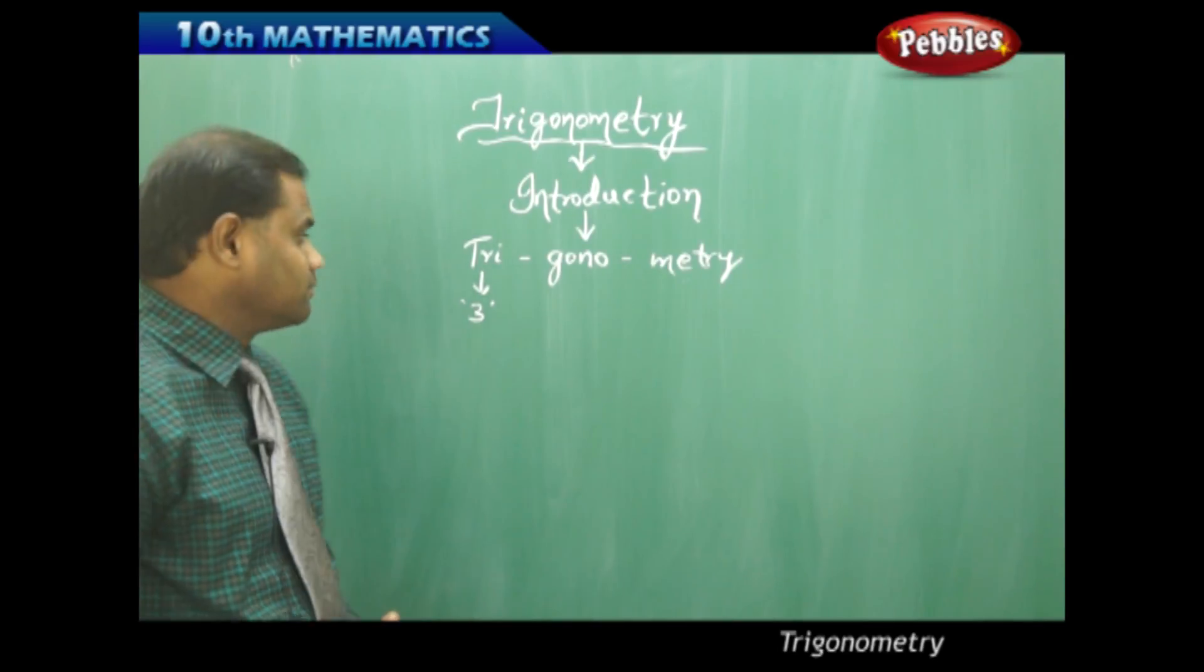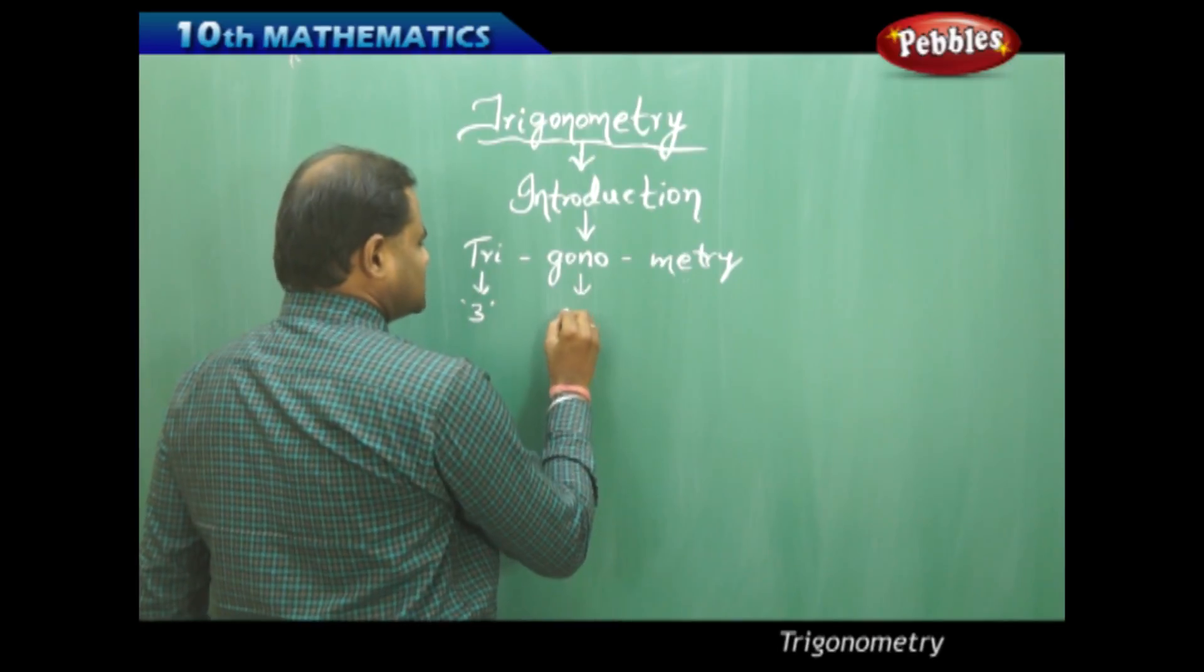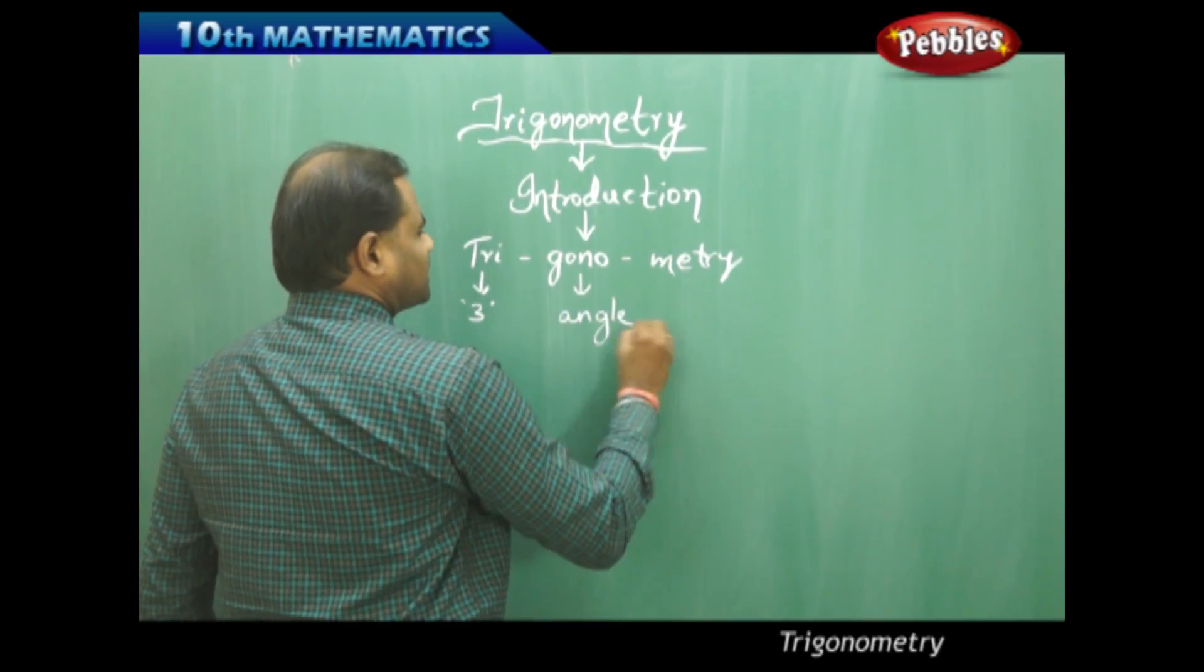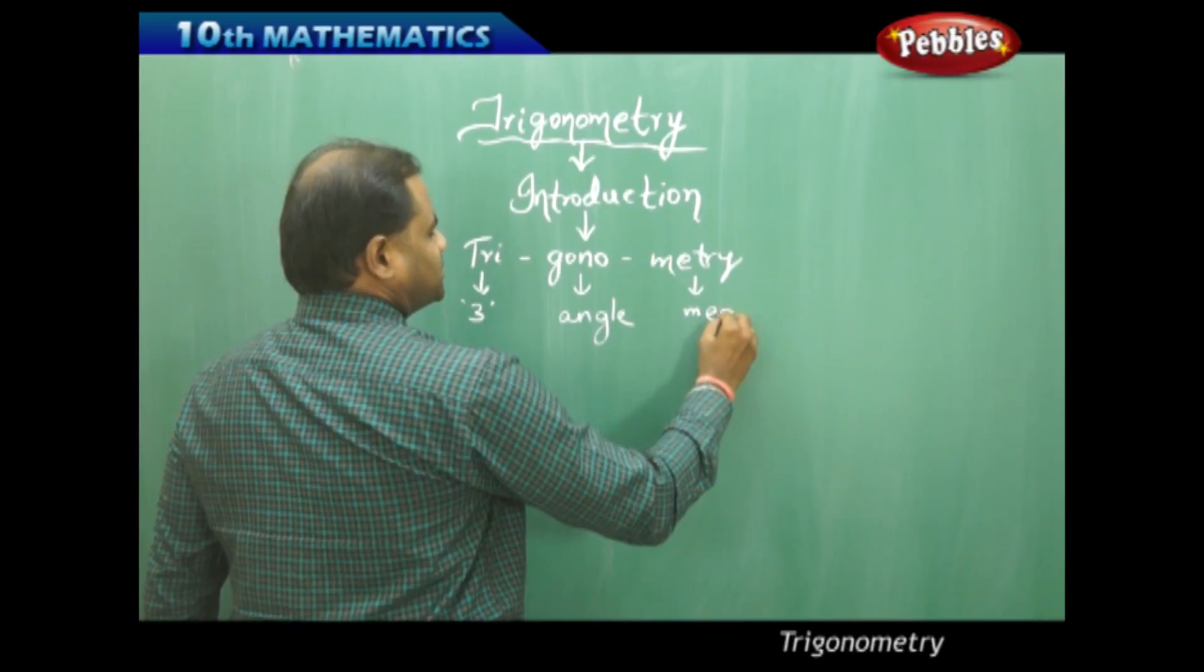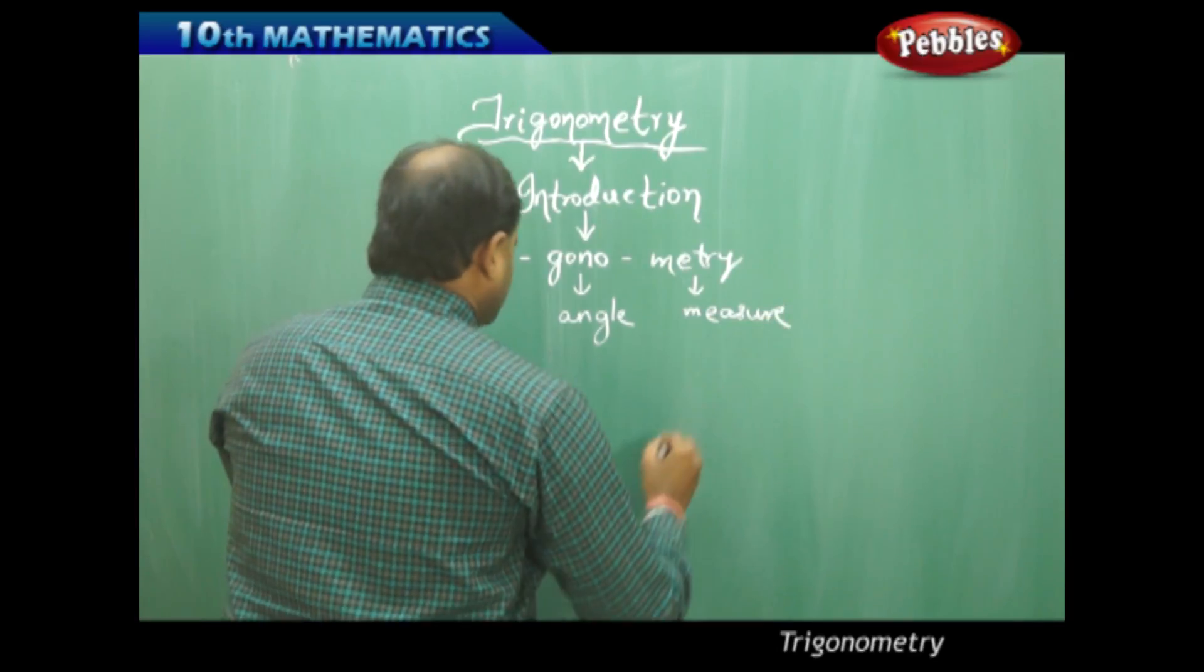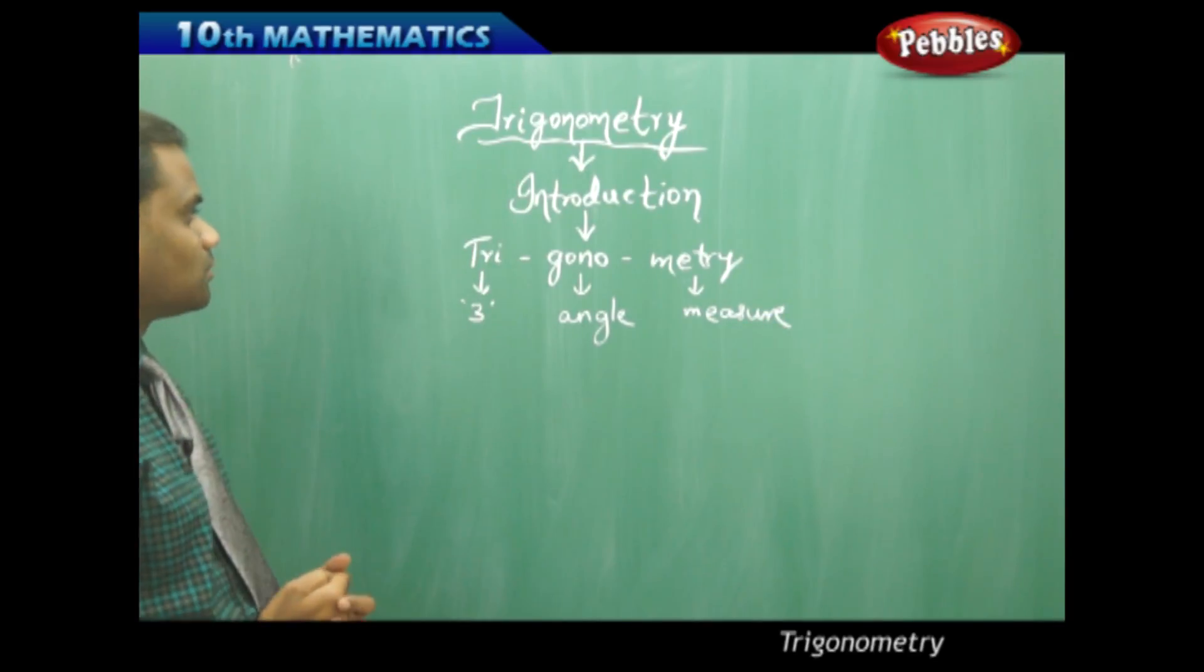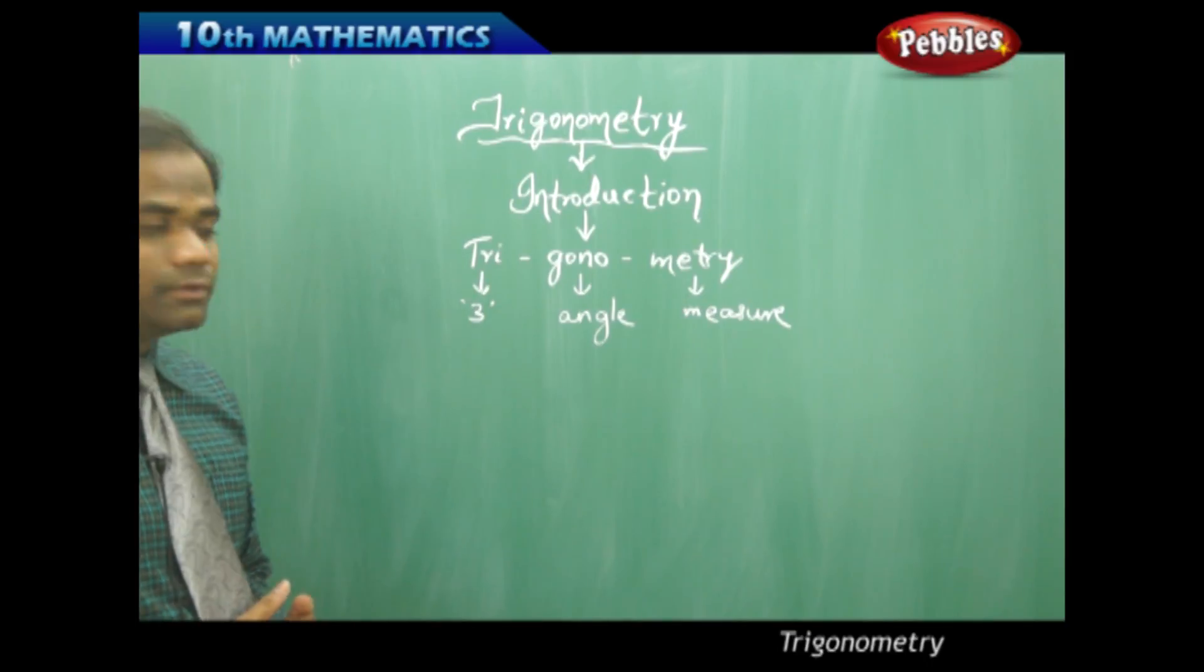We know that a three-sided figure is a triangle, and gono is angle, and metric is measure. So these three basic words split out of trigonometry have their own individual meanings.